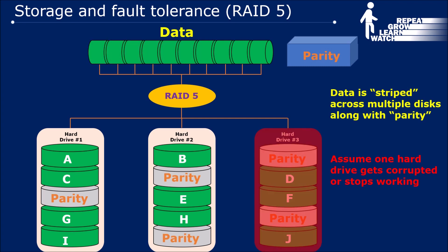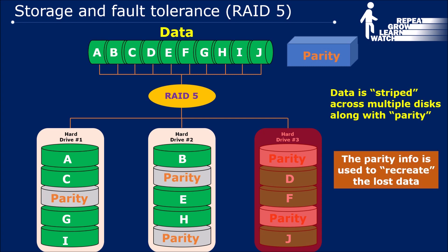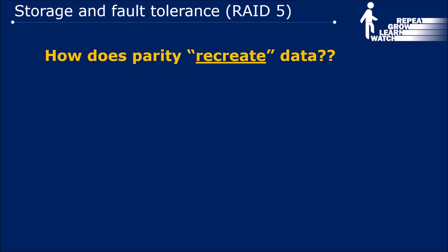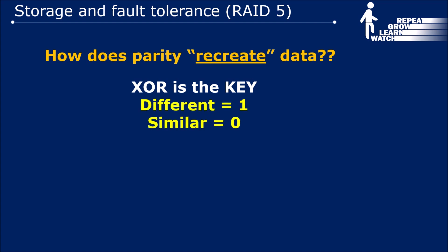If one of the hard drives gets corrupted or stops working, the parity information is used to recreate the lost data. The key operation here is the exclusive OR (XOR). XOR is different from regular OR: if the two bits are different, the answer is 1; if the two bits are the same, the answer is 0. Let's see with an example how the parity is calculated using XOR.